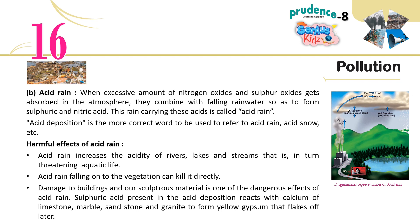Acid rain: When excessive amounts of nitrogen oxides and sulfur oxides get absorbed in the atmosphere, they combine with falling rainwater to form sulfuric and nitric acid. This rain carrying these acids is called acid rain. Acid deposition is the more correct term, also referring to acid snow, etc. Harmful effects of acid rain: it increases the acidity of rivers, lakes and streams, threatening aquatic life; it can kill vegetation directly; it damages buildings and sculptural materials. Sulfuric acid in acid deposition reacts with calcium of limestone, marble, sandstone and granite to form yellow gypsum that flakes off.